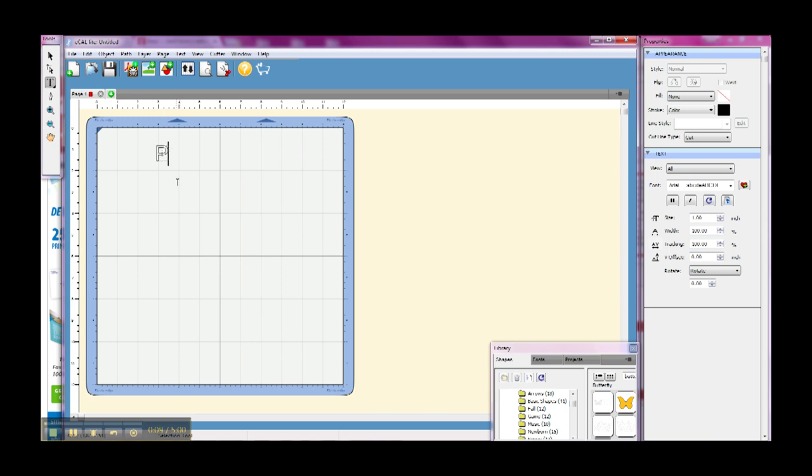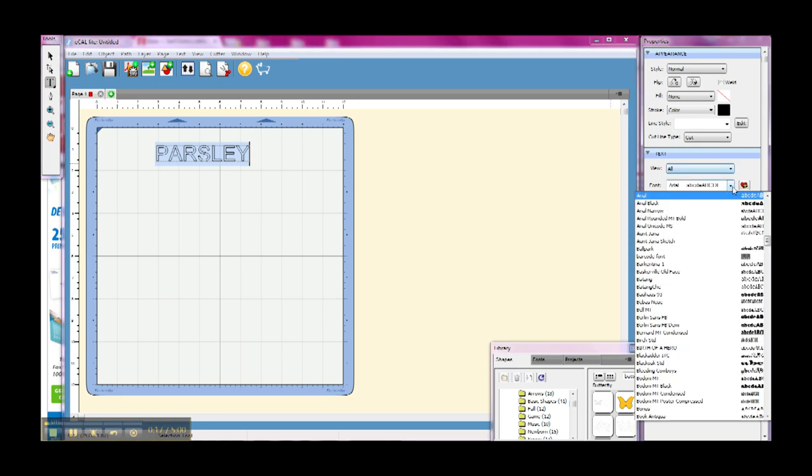Here I have my Sizzix Eclipse 2 software. This is the eCal light software, and I'm typing out the names of the different herbs and plants that I want to put on my plant markers.